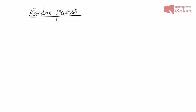Welcome to the next lecture on random processes. We will continue our discussion on the notion of ensemble. As a recap: a random variable, denoted with capital letters like X, Y, Z, is a mapping or function from the sample space to real numbers. Now, if this random variable is also a function of time, we write it as X(t).